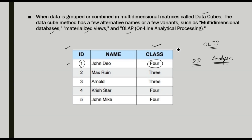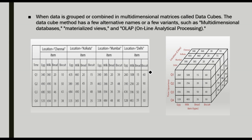Let's look at how data cubes are formed for our data warehouse concept. Consider a table where items like egg, milk, bread, and biscuit are listed, and their sales are recorded on a quarterly basis — Q1, Q2, Q3, and Q4. This gives us two dimensions: items and time, just like a normal database. When we add one more dimension — location, such as Chennai, Kolkata, Mumbai, and Delhi — we get a 3D structure.